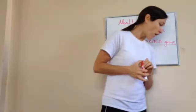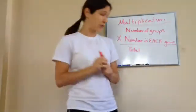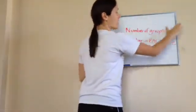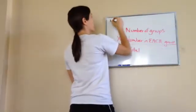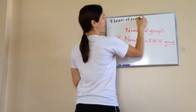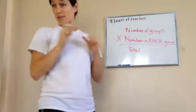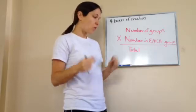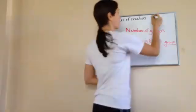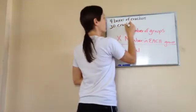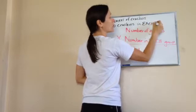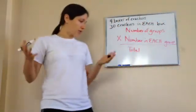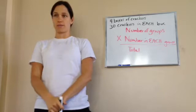In the pantry, there are four boxes of crackers. I'm going to write down some important information. Four boxes of crackers — if you had the problem in front of you, you could just underline it. In the pantry, there are four boxes of crackers with 30 crackers in each box. Then it says: all together, how many crackers are in the four boxes?